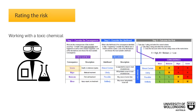Now let's consider the likelihood of this consequence occurring, taking into consideration factors like how much of the chemical is used, what its concentration is, and what controls are in place to prevent contact, such as working only in a fume hood and using personal protective equipment. If we are only using small quantities and working in a fume hood with personal protective equipment and clothing, then the most probable likelihood would be unlikely. Therefore the risk of working with methanol is medium.